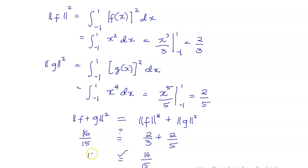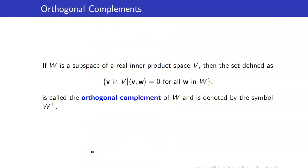We have just verified our Pythagorean theorem. Next, we can also talk about the orthogonal complement of a subspace of a real inner product space V. It is defined as the set of vectors in V that are orthogonal to all elements in W, and we also use the same symbol that we used in R^n: W-perp.